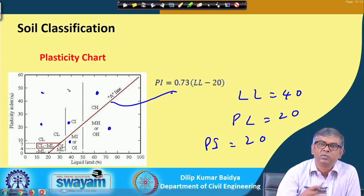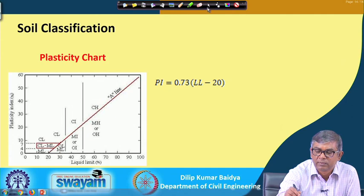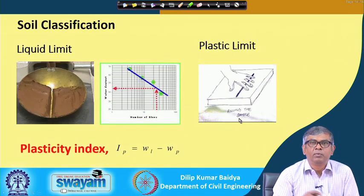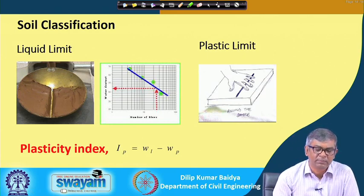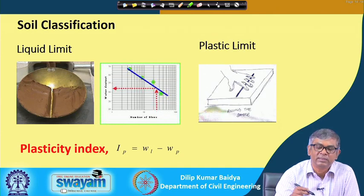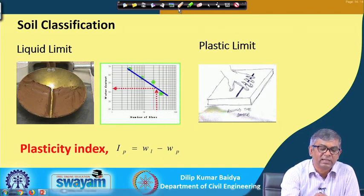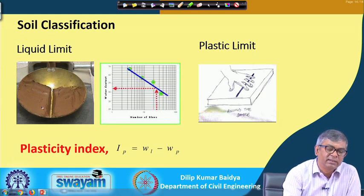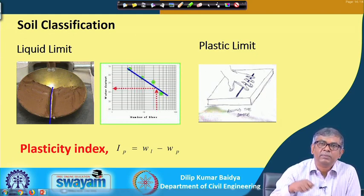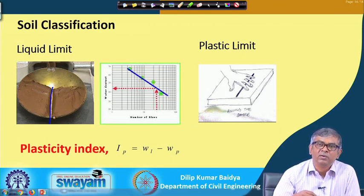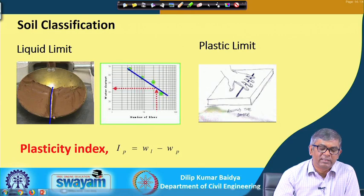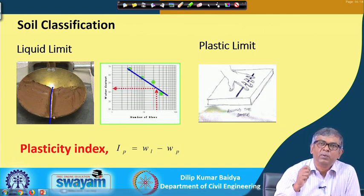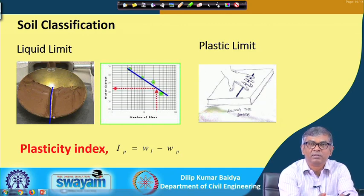Whatever I mentioned about plastic limit and liquid limit — in soil mechanics we have discussed these. The procedure for the liquid limit test: you have to make a soil paste in the Casagrande apparatus, cut a groove in it, give a number of blows, and the water content corresponding to a particular stage is the liquid limit. The liquid limit is the water content at which the soil requires exactly 25 blows to close the groove.